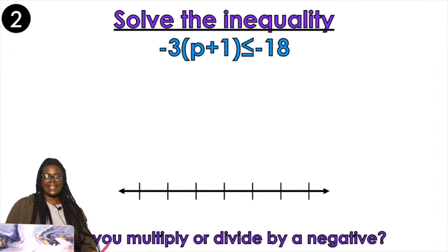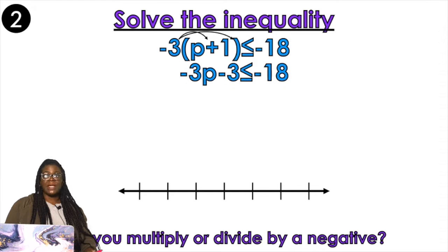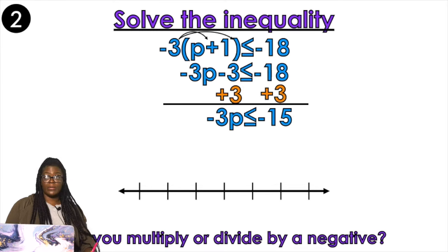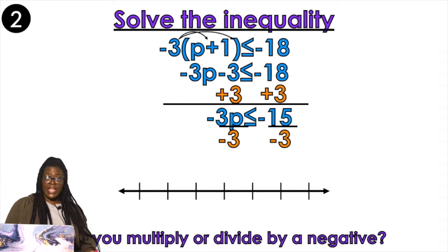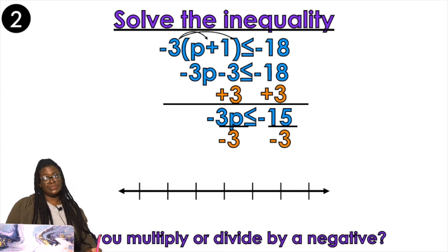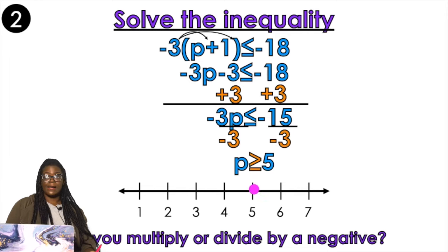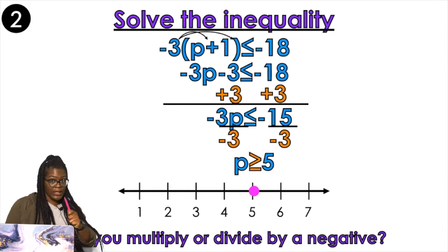Negative 3 parentheses — distribute. We got to get in there with the distribution. Now that we've distributed, get rid of the constant. So add 3. Negative 3p is less than or equal to negative 15. How do I get rid of the negative 3 in front of the p? Divide. Is that number a negative? Yes it was. When you divide both sides by a negative, flip that symbol. P is greater than or equal to 5. Open circle or closed circle? Closed. Left or right? Right.